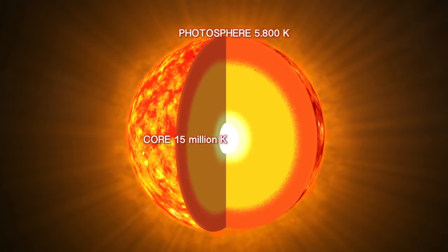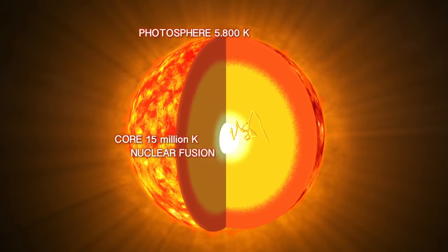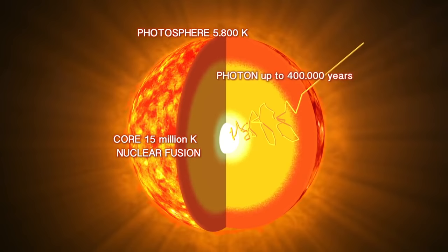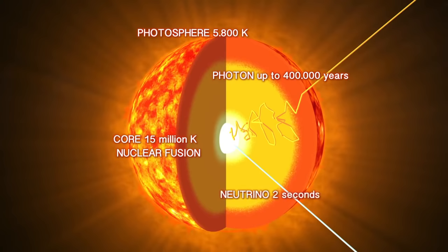Photons take up to 500,000 years to get out of the sun, as they are constantly intercepted, absorbed and re-emitted. But neutrinos, having no electric charge, travel in a straight line from the core of the sun. They come out at the speed of light as soon as they are created.